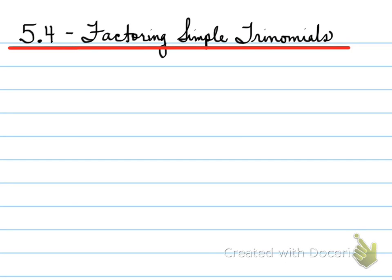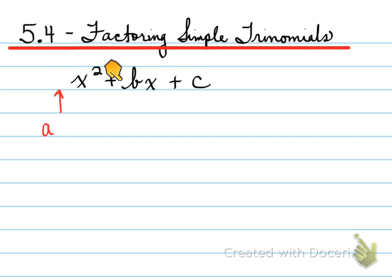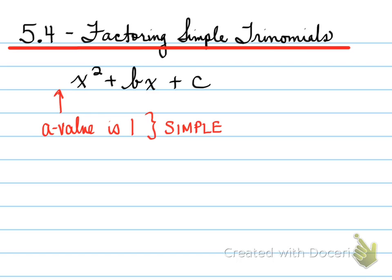5.4, factoring simple trinomials. What makes a simple trinomial? So here what you notice is x squared plus bx plus c. Let's look at specifically the a value. What do you notice that the a value is? Well, if the a value is 1, we call that a simple trinomial. So this is known as a simple trinomial because the value in front of the x squared is 1.